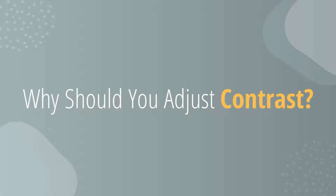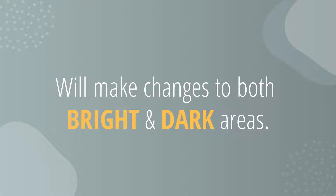The contrast settings in your mobile phone photographs will affect both the bright areas and the dark areas at the same time. If you increase the contrast settings, it will make the darks darker and consequently the brights brighter. Just the opposite will happen when you decrease the contrast. To help you better understand when you will want to make this adjustment, let's look at a photo and experiment to see what happens.